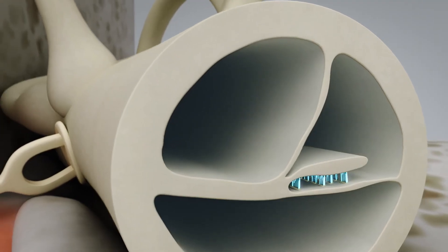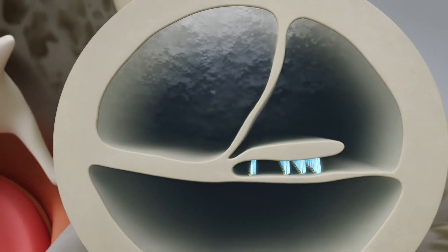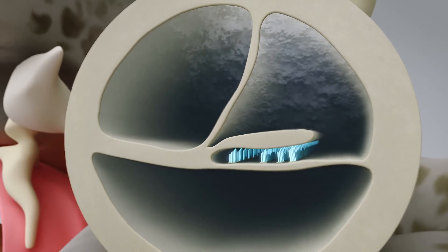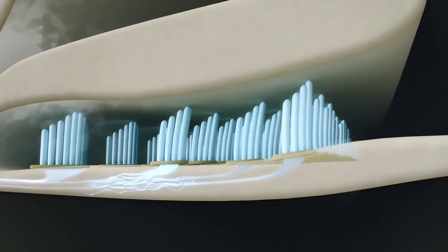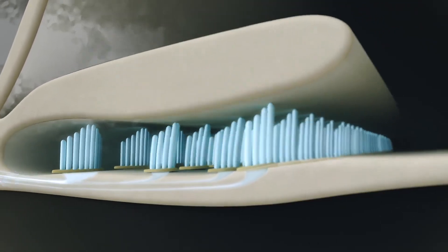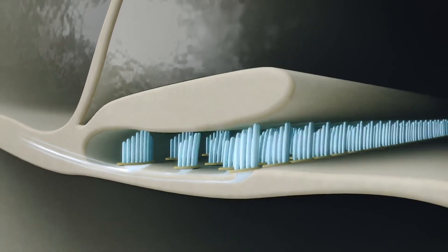When the sound waves vibrate the oval window, the fluid begins to move, thus setting minute hair cells in motion. These hair cells then transform the vibrations into electrical impulses, which are sent via the auditory nerve and onto the brain.